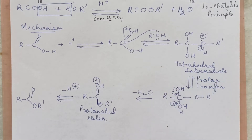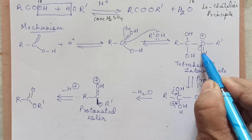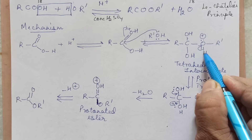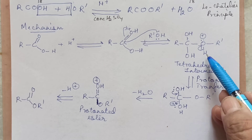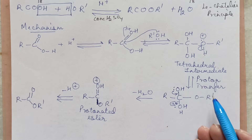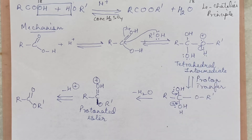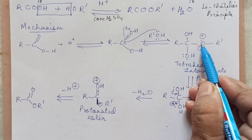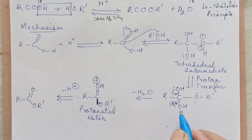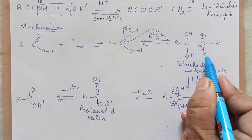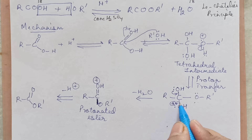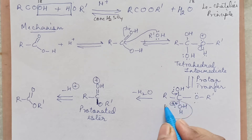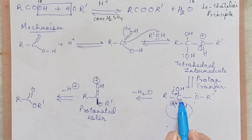So you get a tetrahedral intermediate. Now O with a positive charge is very electronegative and doesn't like it, so it tries to pull the H electron from a neighboring O, making that H come out as a proton. This proton is then transferred to the other oxygen which has two lone pairs, giving it three bonds and a positive charge. That O+ now pulls electrons and comes out as water, leaving the carbon with only three bonds.